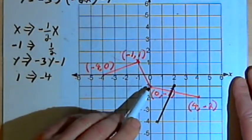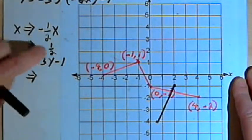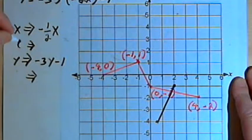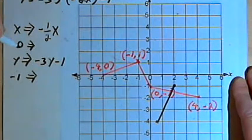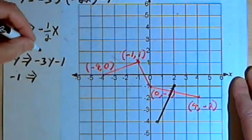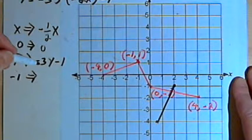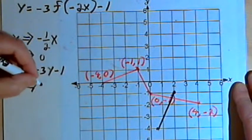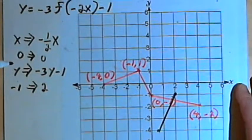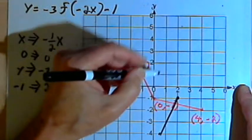My next point is at 0, negative 1. x is 0, y is negative 1. I want to multiply that 0 by negative one half — that's still 0. I want to multiply the y-coordinate, negative 1, by negative 3, so that's positive 3. And then subtract 1 from it, so that becomes positive 2. So I'll have a point at 0, 2. There's 0 and there's 2.